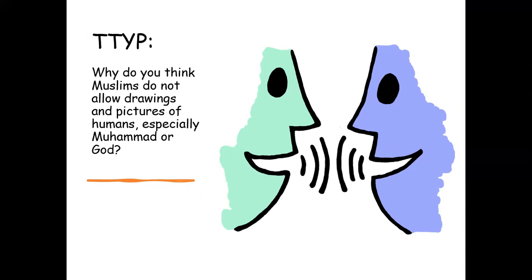Well done to all those who managed to make the link to their previous learning. The reason why Muslims do not allow drawings of Muhammad or Allah is because Allah is the Creator — he is the only one who can create the image of a person, and no one else has that ability. Therefore they are not allowed to draw images that represent the prophets or Allah.